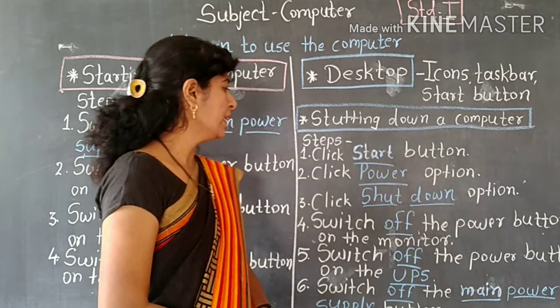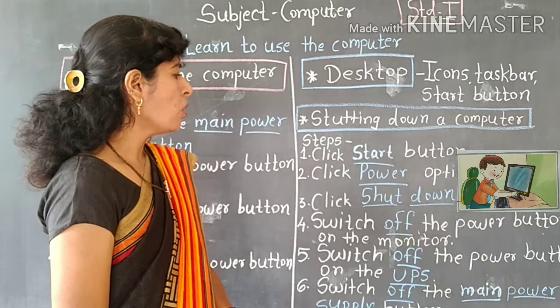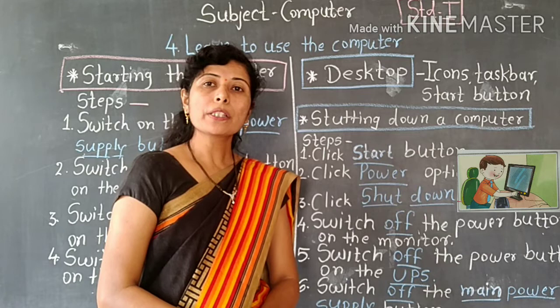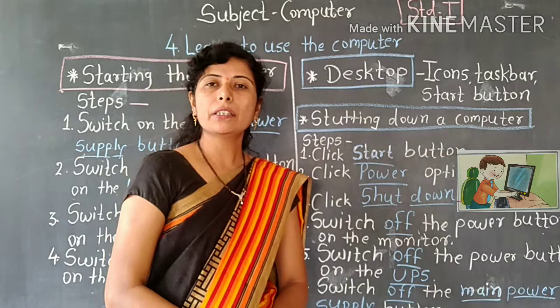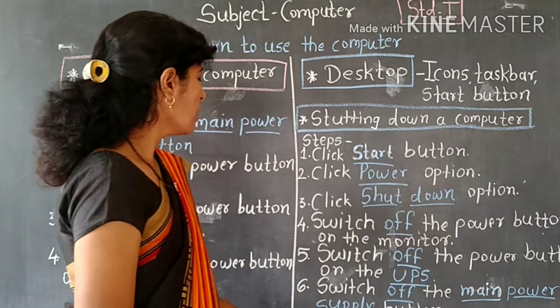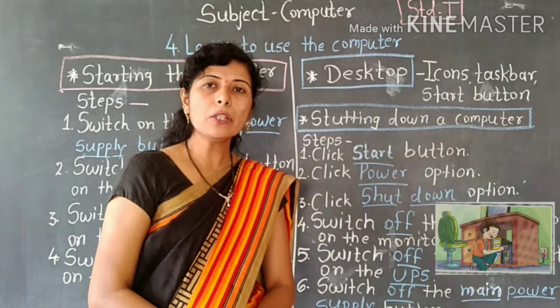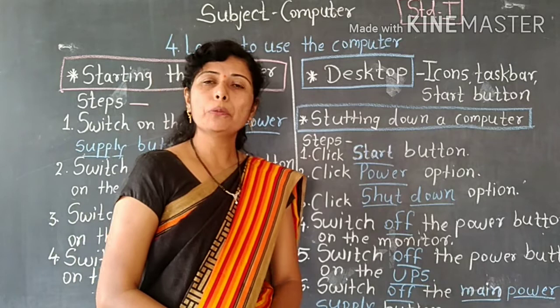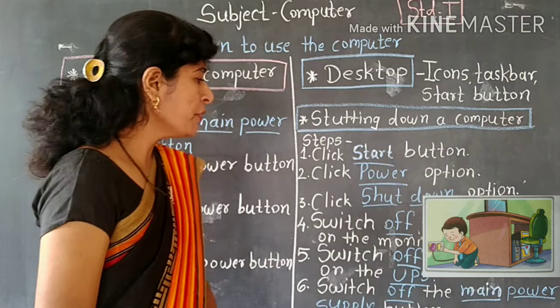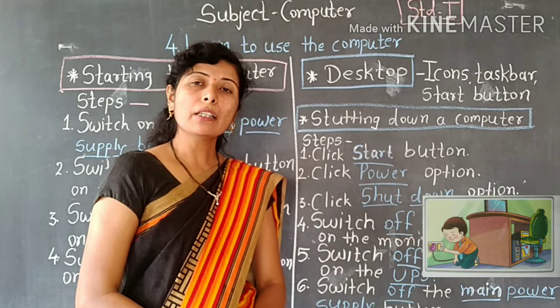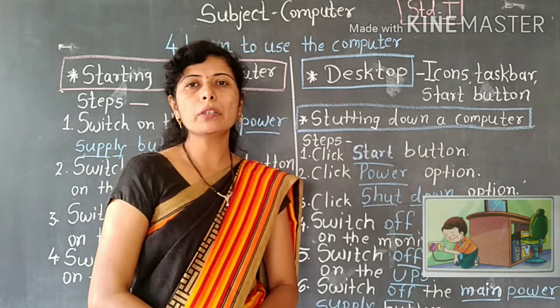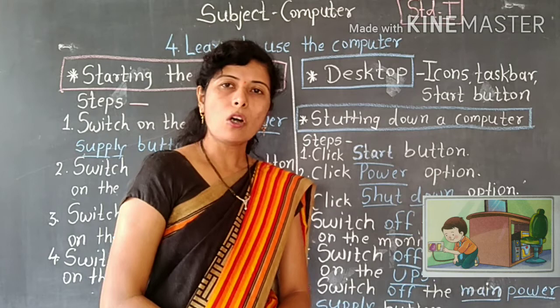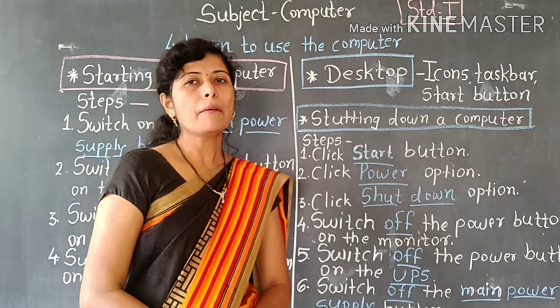After shut down, switch off the power button on the monitor. Then switch off the power button on the UPS. The last step is to switch off the main power supply button. The power supply means the electricity provided to the desktop.